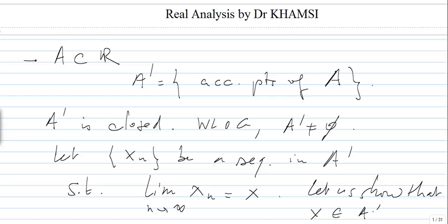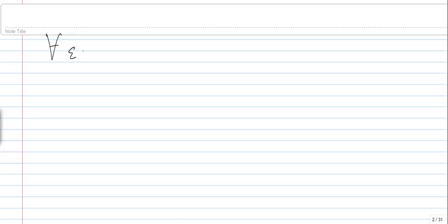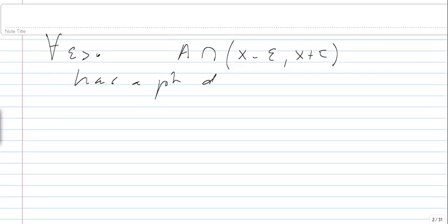In other words, if you have a limit of accumulation points of A, then the limit is also an accumulation point of A. So what do we want to show? We want to show that for every epsilon, A intersects (x − ε, x + ε) has a point other than x — which is equivalent to saying that it has infinitely many points.